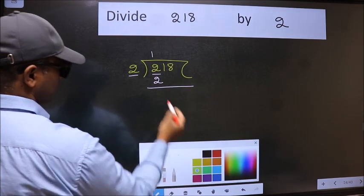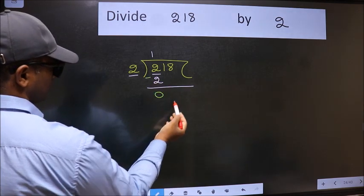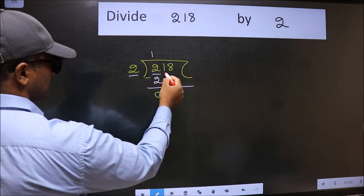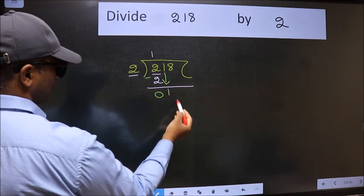Now we should subtract. We get 0. After this, bring down this number. So 1 down.